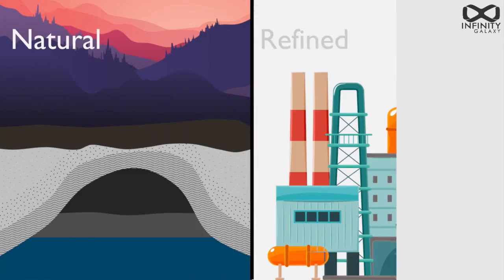In general, bitumen is divided into two categories: natural and refined.